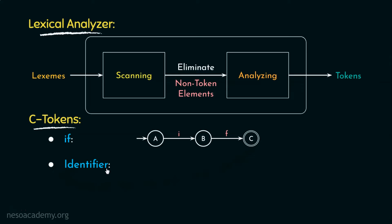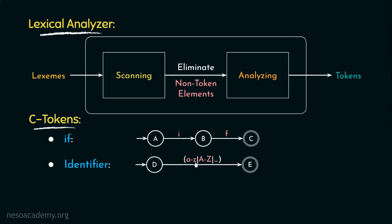Considering identifiers — from the initial state D, seeing any small letter a to z, any capital letter in the same range, or an underscore, we move to the final state E. A single letter can be an identifier, such as the variable 'i' used in loops. Additionally, an identifier can have any number of letters, underscores, or digits, but they must follow either a letter or an underscore.